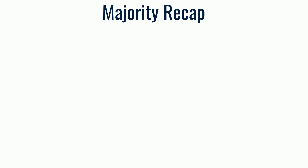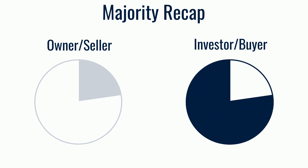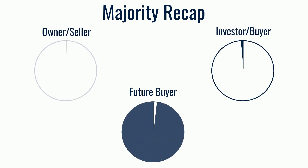For owners that want to continue to run the company but would like to remove some chips from the table, liquidity is the main motivator behind a recap. For these owners, a majority recap may be their best option. Selling part of the company to an outside buyer allows the owner to diversify their personal wealth and limit their risk in terms of investment. When partnering with a private equity firm or similar investor, a recap provides the potential for a second liquidity event in the future, when the private equity firm sells the company.